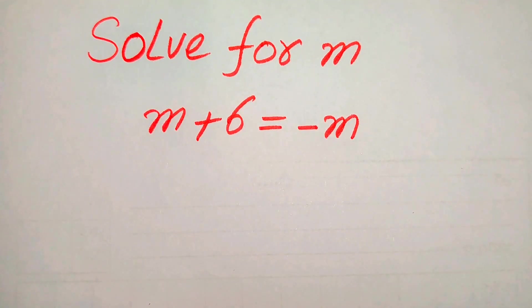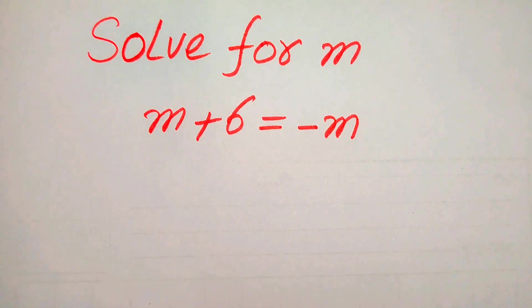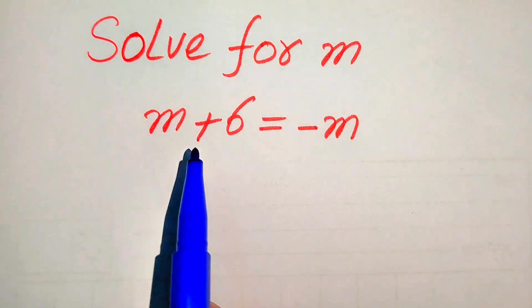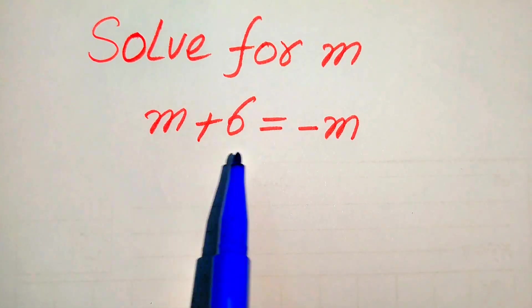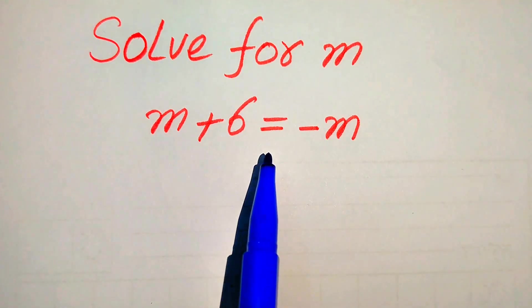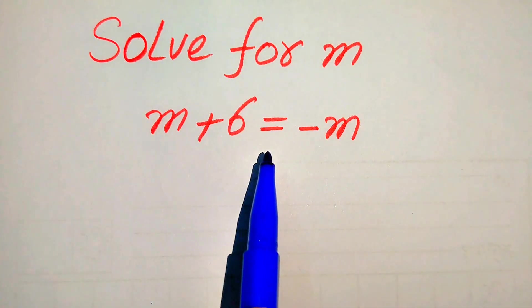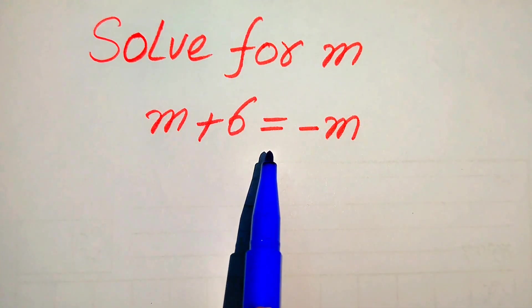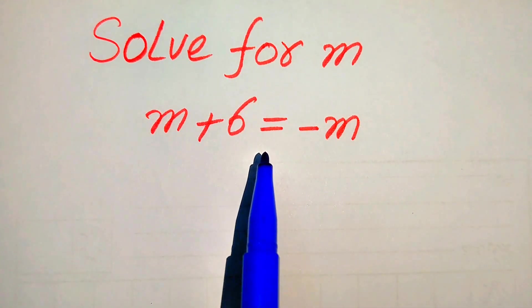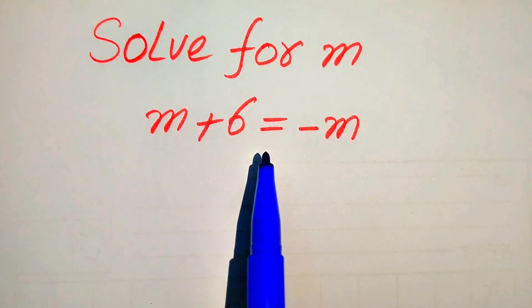Hello everyone. How to solve this problem for the values of m: m plus 6 is equals to minus m. We solve this problem for all the values of m.